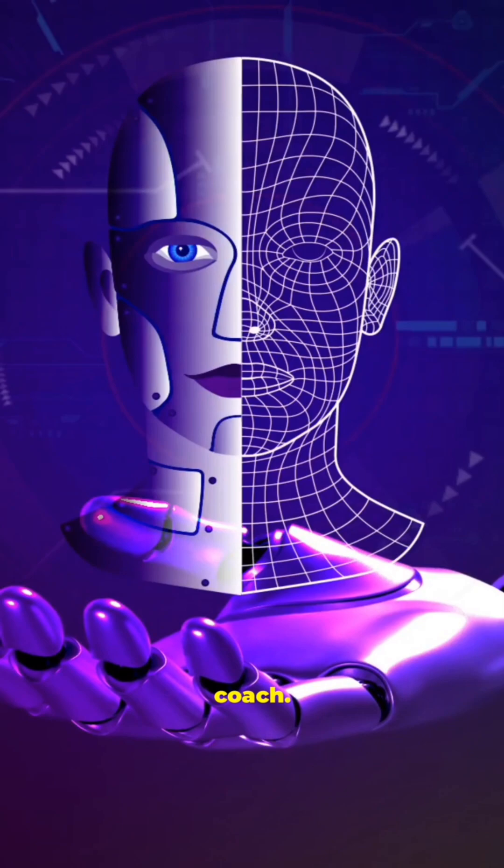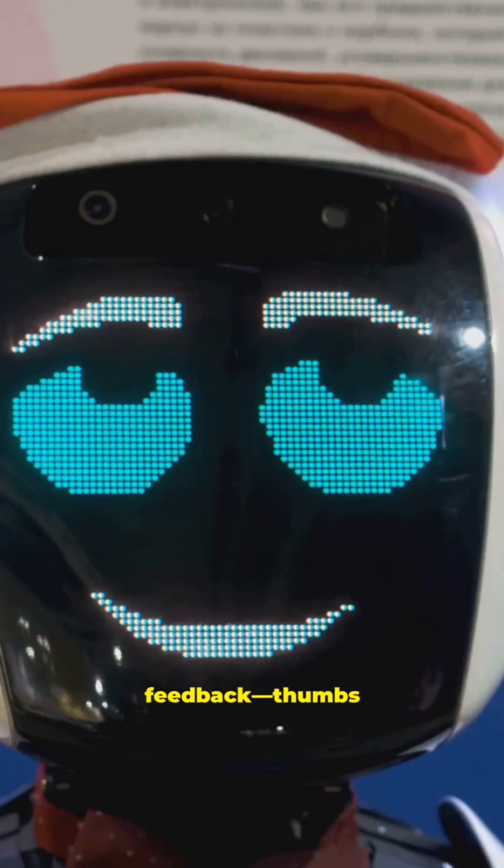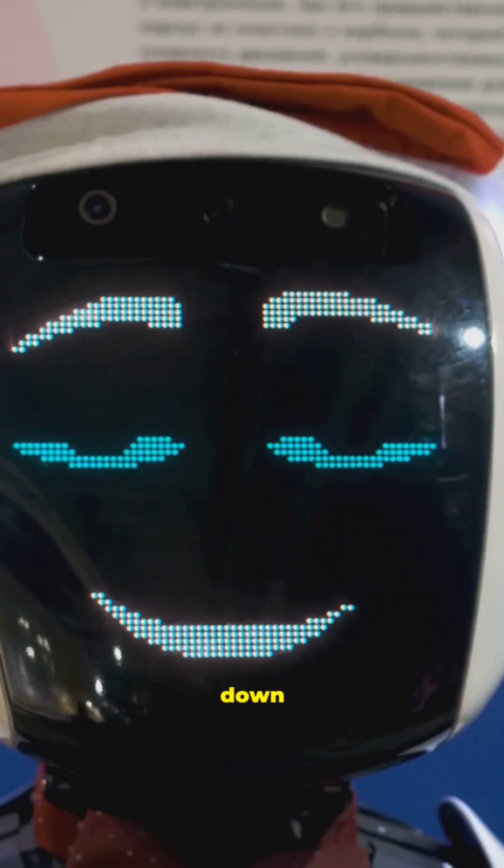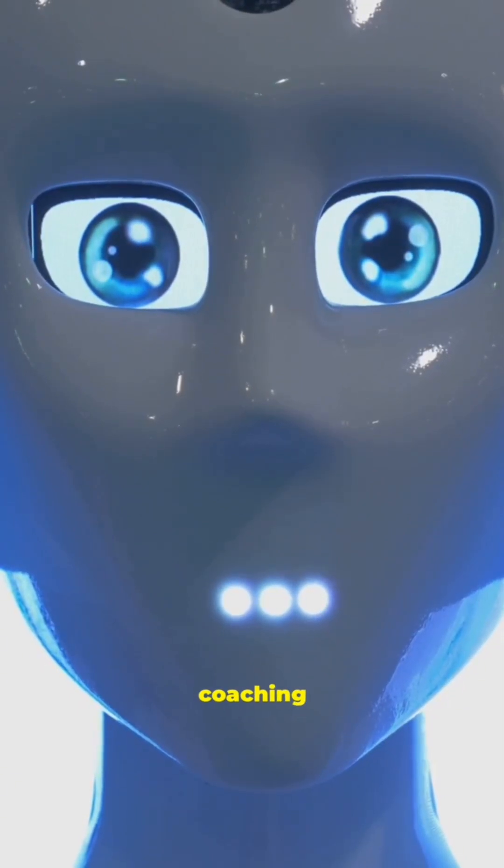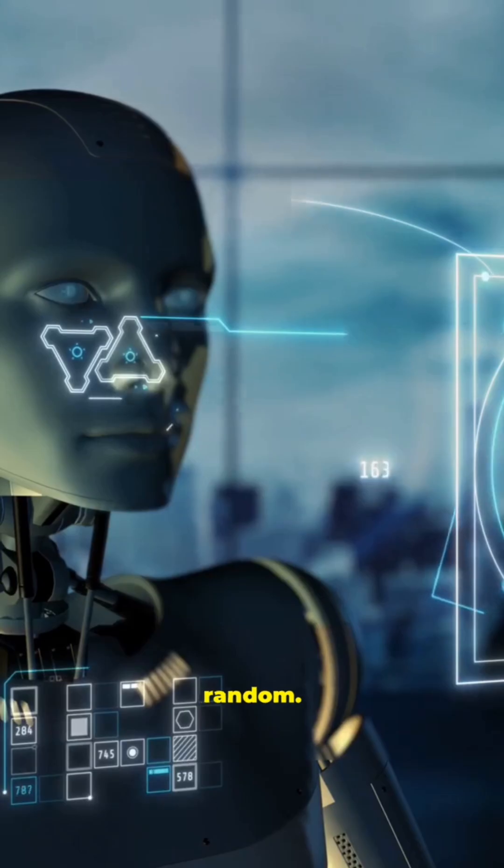First, AI got a coach. Picture a curious childlike intelligence scribbling on a chalkboard. With every answer, people gave feedback. Thumbs up for the right direction, thumbs down when it got things wrong. Just like guiding a toddler, this steady coaching made AI more helpful, more accurate, and far less random.